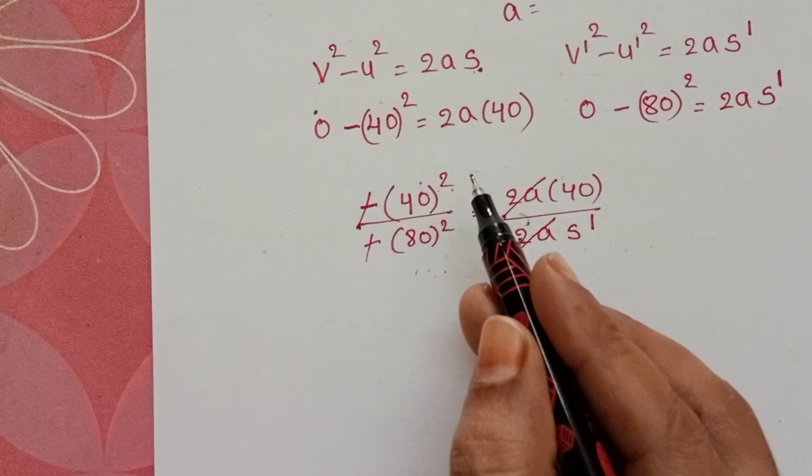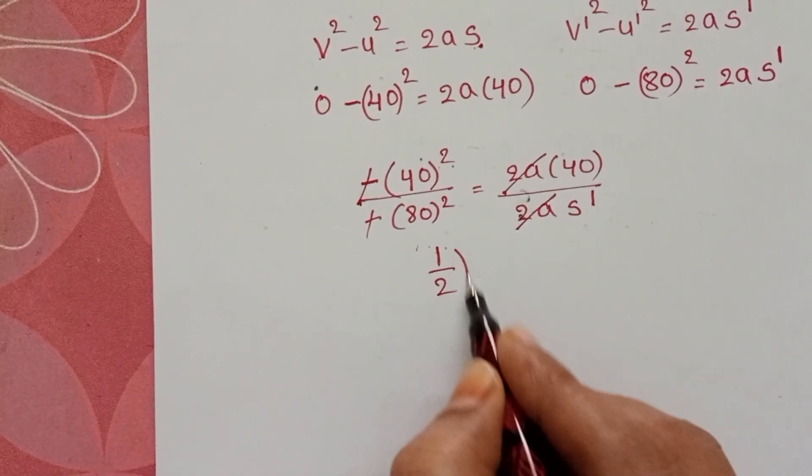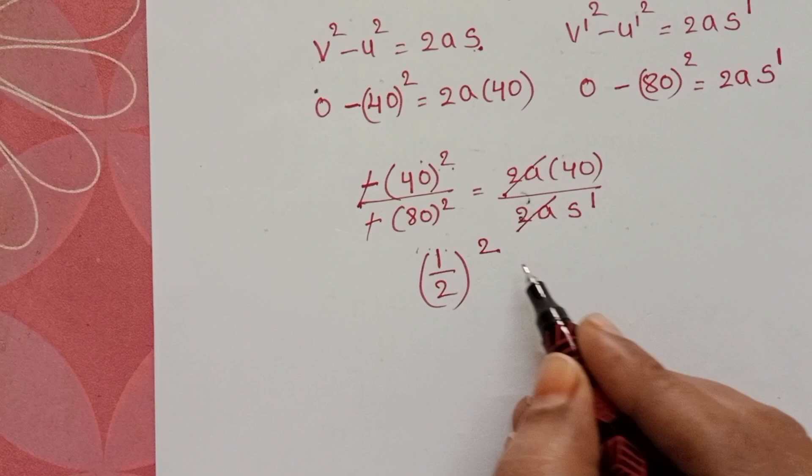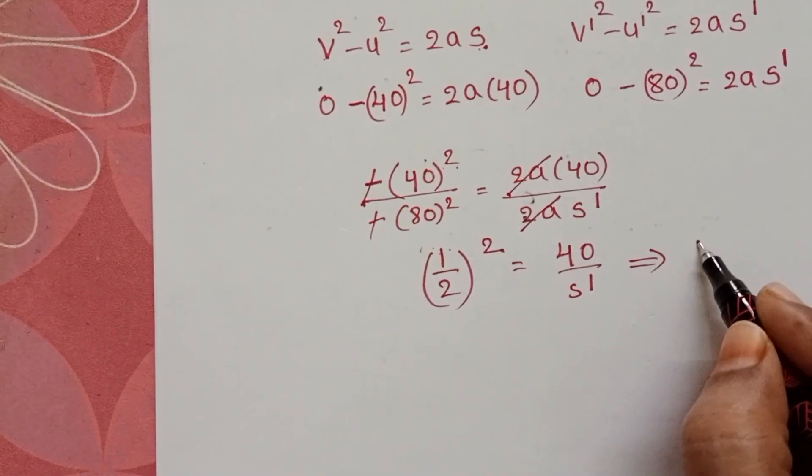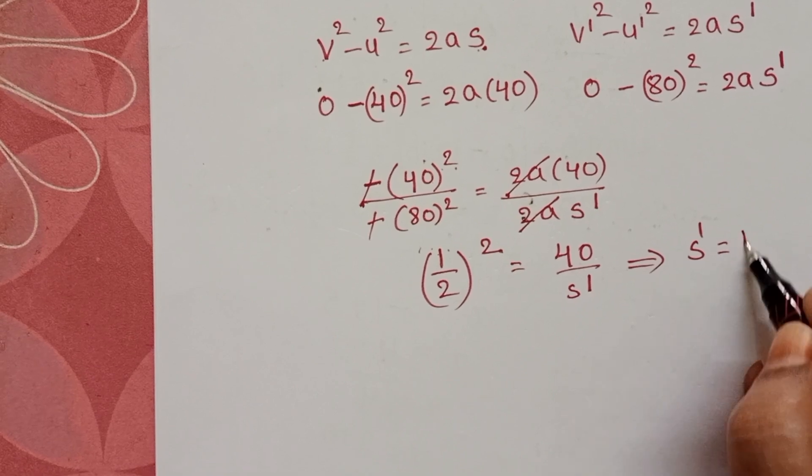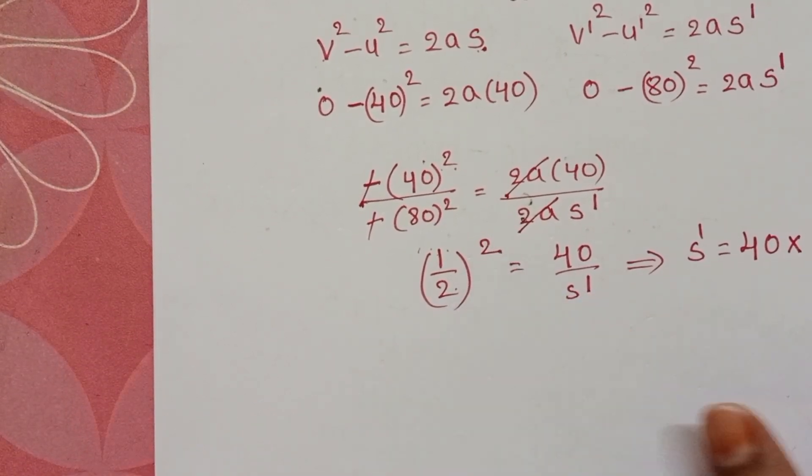So (40/80)² simplifies to (1/2)² = 1/4, which equals 40/s'. From this, s' = 40 × 4.